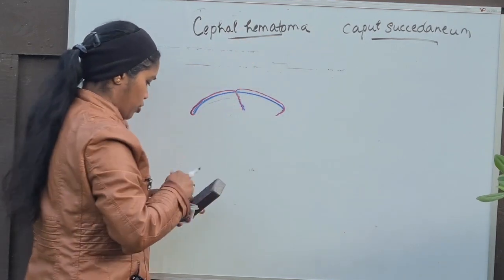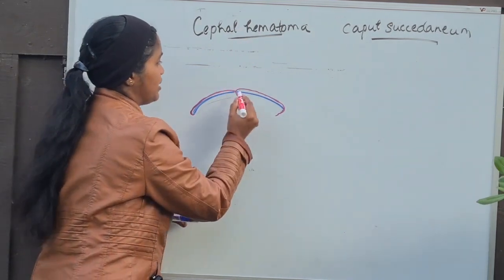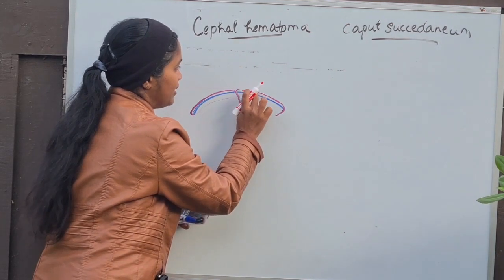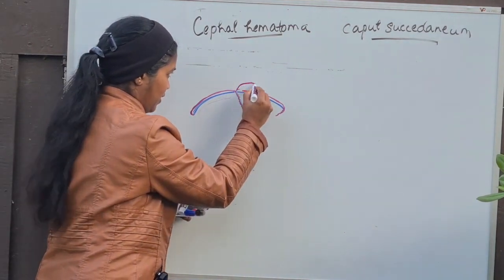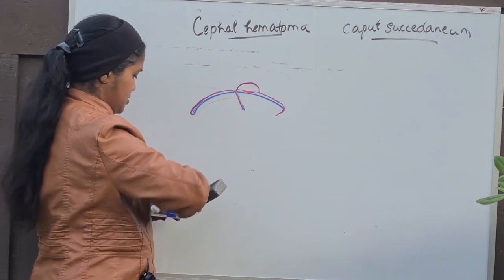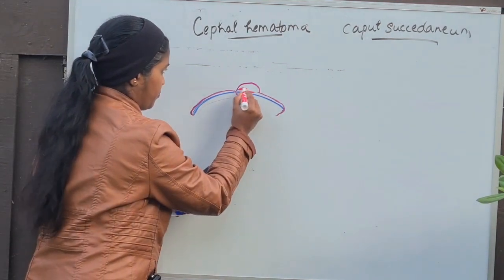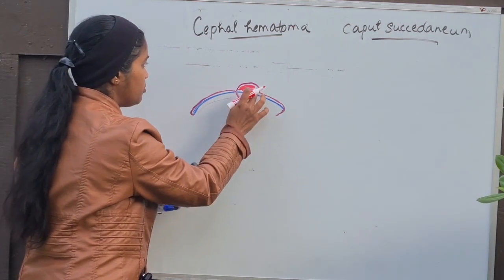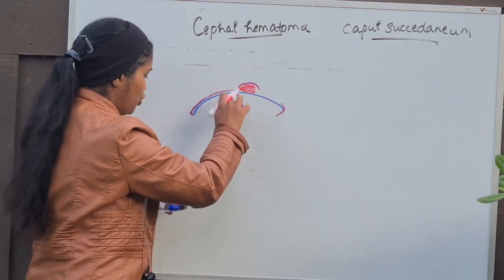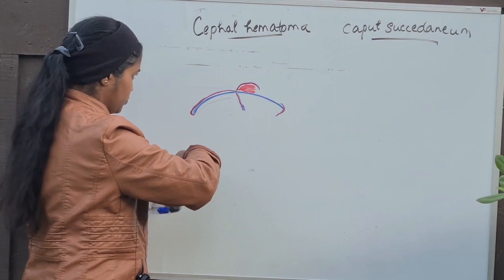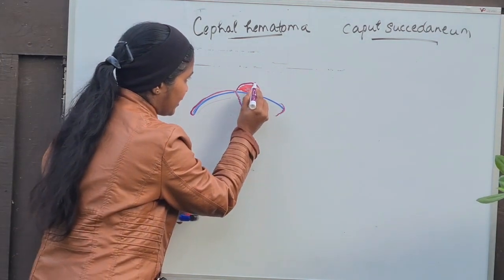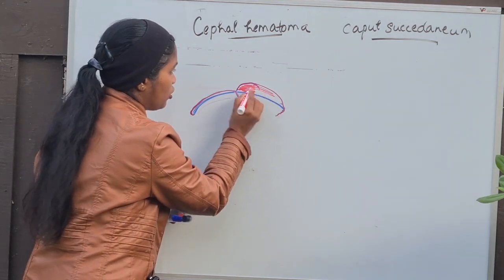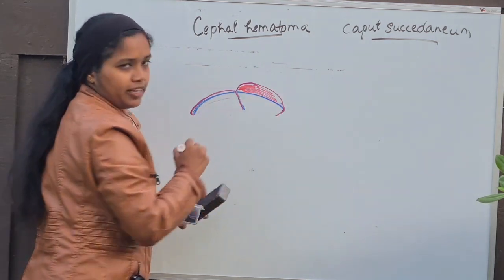What is Cephal Hematoma? Cephal Hematoma is nothing but blood inside this area. So when the blood starts collecting, you will be finding a swelling. Since the periosteum is in continuity with the skull bone, whenever the blood gets collected, it will collect throughout but it will not cross the suture lines.